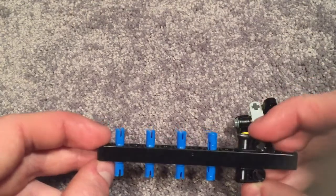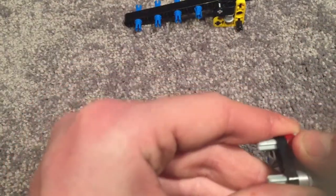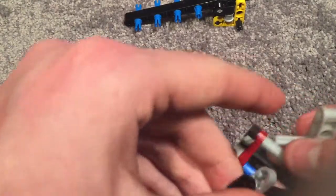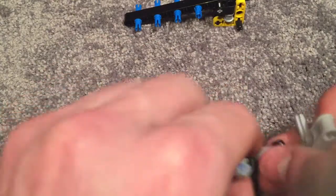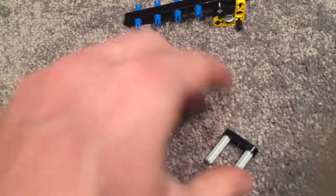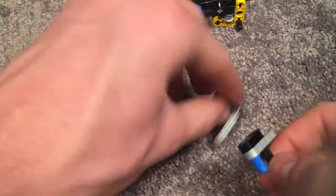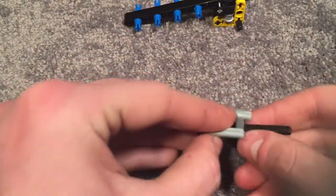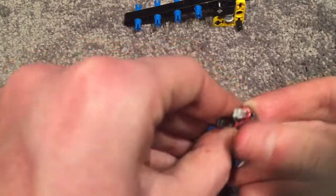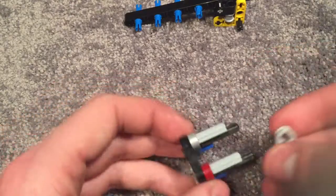Next you're going to make this piece here. You want to make two of these pieces, pretty easy to make. Take this and put it through like that, make sure it's flush on the top or else it'll be the wrong way, and then put this on here.